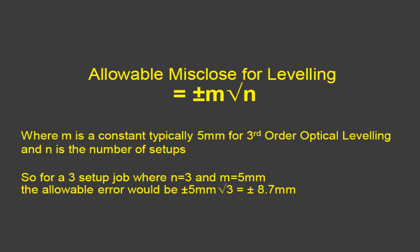The number of setups is generally determined by remembering that each setup usually has a foresight and a backsight, and there may be a number of intermediate sights in between. The backsight is always the first shot and the foresight the last. If you add up the number of backsights it should equal the number of foresights, and the number of foresights or backsights is equal to the number of setups.